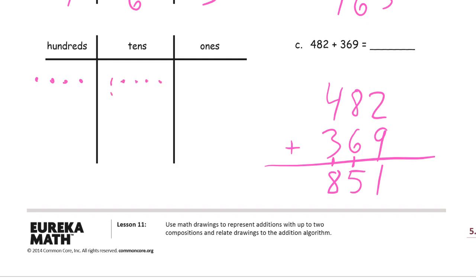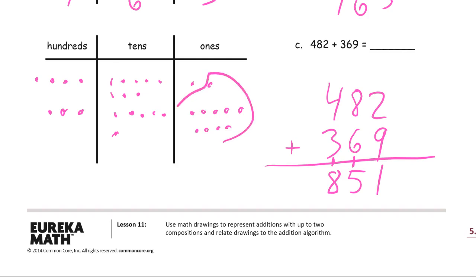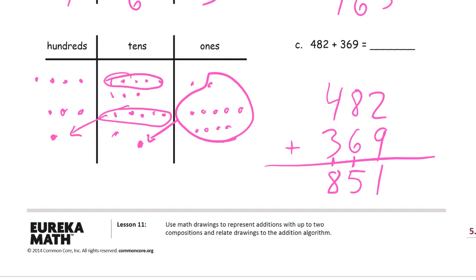Drawing 482 and 369. This nine only needs one more to make a 10. I can see there's a five-group row and another five-group row — that's going to compose a hundred because 10 tens makes a hundred. I've got one left behind, and five tens left behind. And I count my hundreds: 1, 2, 3, 4, 5, 6, 7, 8 hundreds. 851.